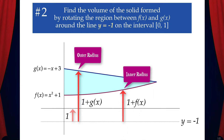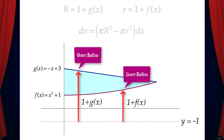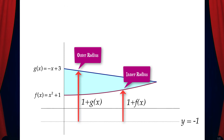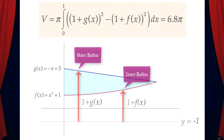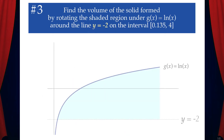Now that we have the outer radius and the inner radius, we can write the equation of dv, the volume of one washer. Then to find the volume of the solid, we write the definite integral. After solving with a calculator, we get 6.8π.